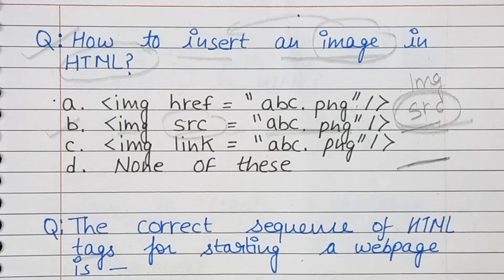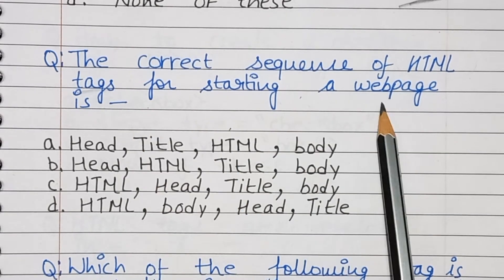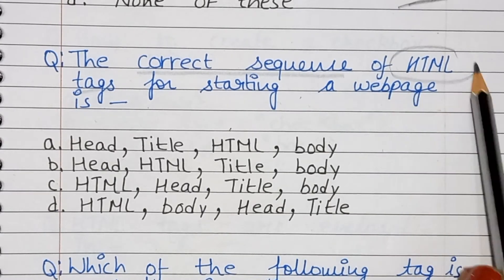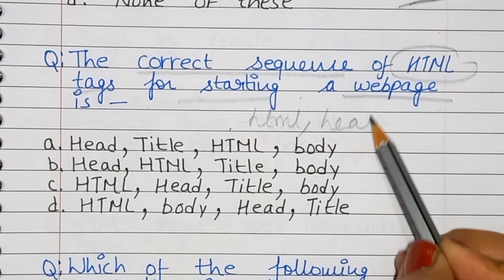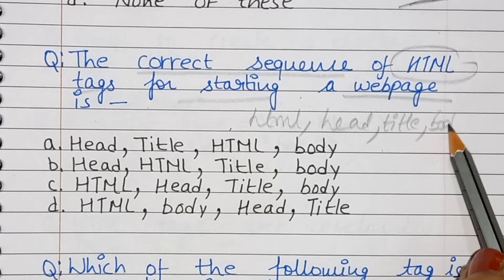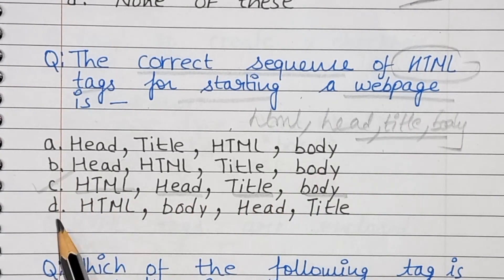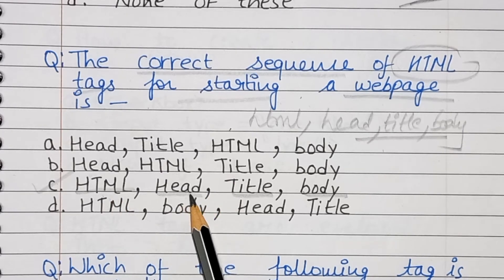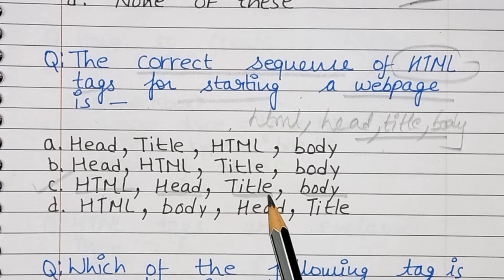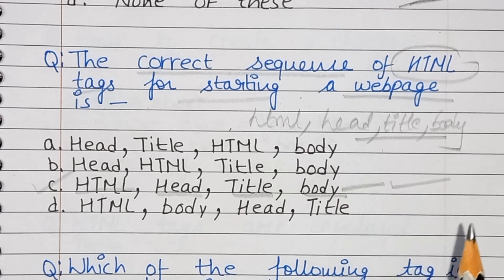Next question: What is the correct sequence of HTML tags for starting a webpage? The sequence is HTML, then Head, then Title, then Body — option C. The HTML document starts with the HTML tag and ends with the HTML tag. The Head tag is the document header, the Title tag must be within the Head tag, and the Body tag contains the text displayed on the webpage.